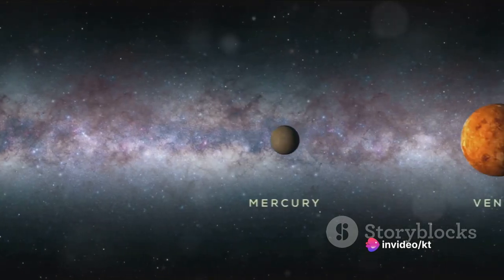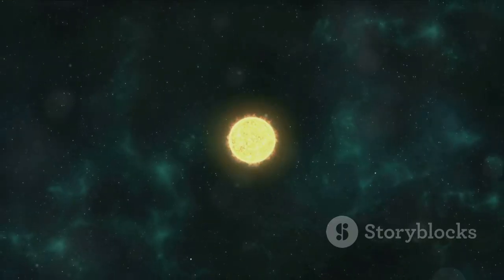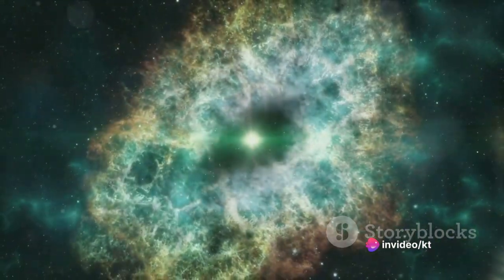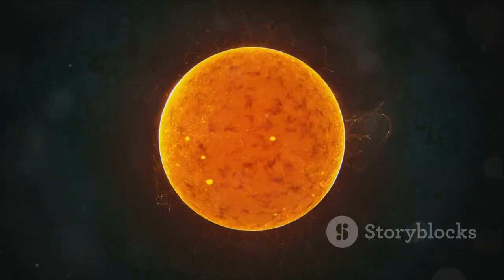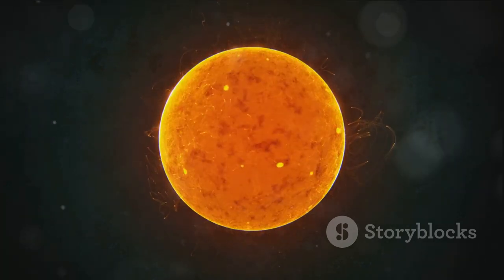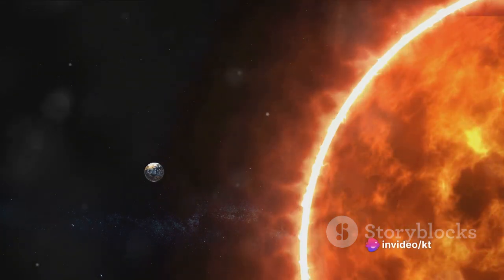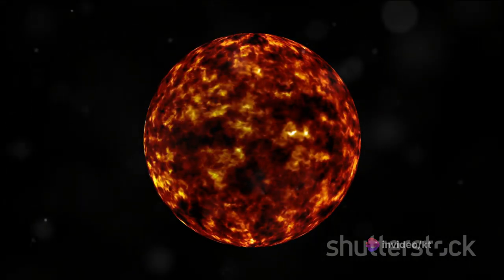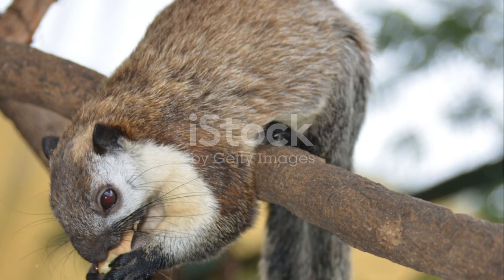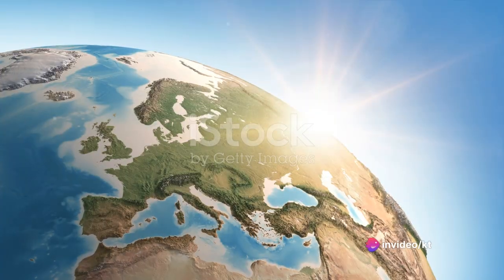But what makes UY Scuti so much larger than other stars? The answer lies in its stage of stellar evolution. UY Scuti is in a phase known as the red supergiant stage. In this phase, stars have exhausted the hydrogen at their cores and are now burning helium or heavier elements, causing them to expand dramatically. UY Scuti's core is burning helium, making it expand to an incredible size. In terms of mass, however, UY Scuti is not the heaviest star. Despite its vast size, UY Scuti is only about 30 times the mass of our sun. This is because its outer layers are comparatively cooler and less dense.